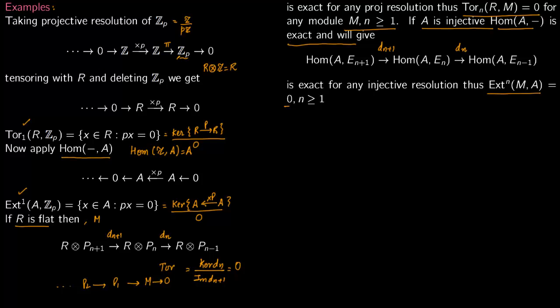Yeah, so again, I just want to quickly mention here that here Tor is just applying R, so this will be nothing but R tensor with Zp, which we have just skipped here. Applying Ext to 0 is nothing but Hom of